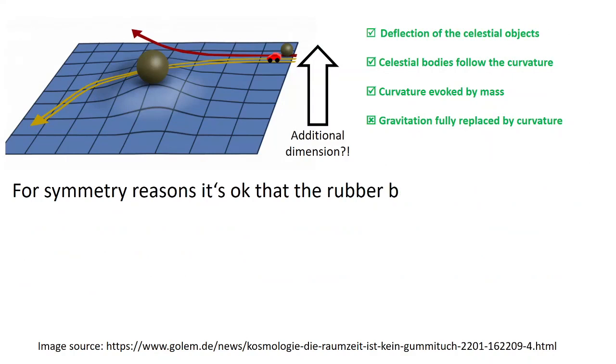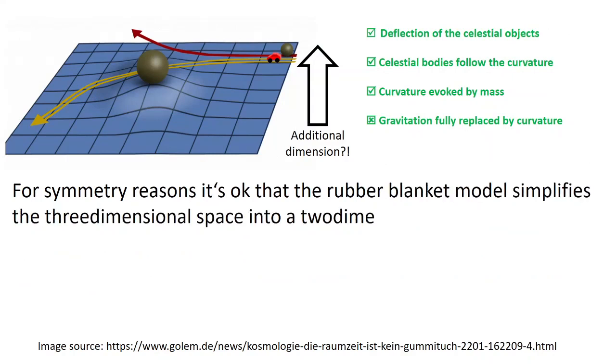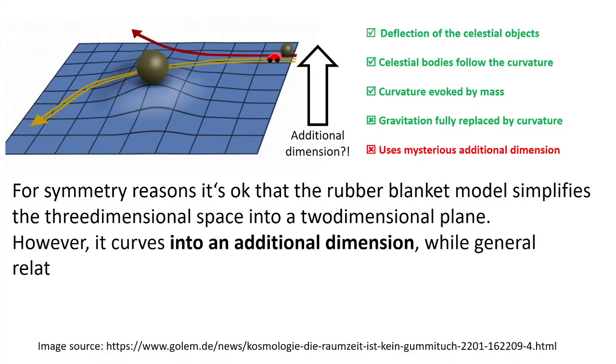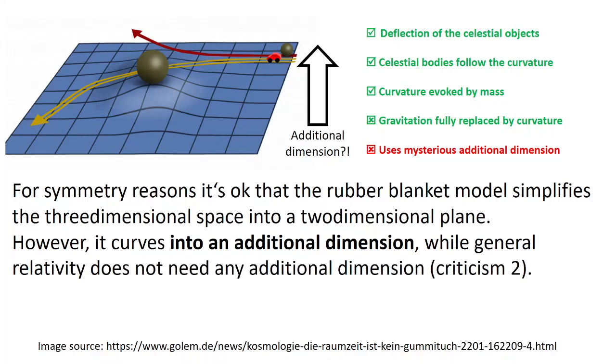For symmetry reasons, it's okay that the rubber blanket model simplifies the three-dimensional space into a two-dimensional plane. However, it curves into an additional dimension, while general relativity does not need any additional dimension.